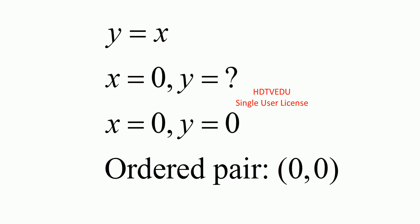What happens when we choose x equals 0? What is the relationship between x and y? y is equal to x. If y is equal to x, and we have to determine y, then what is y when x equals 0? It is 0. So our ordered pair is 0, 0.